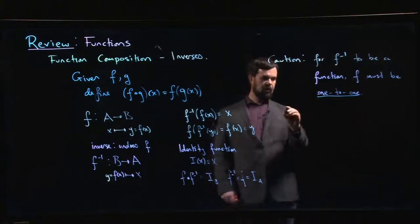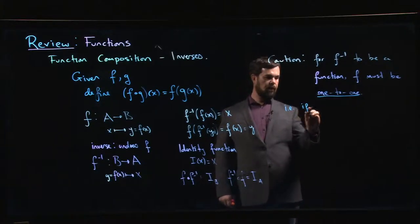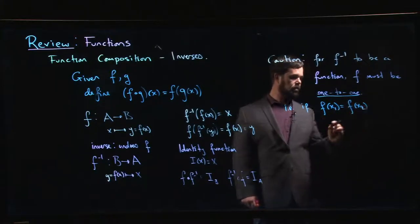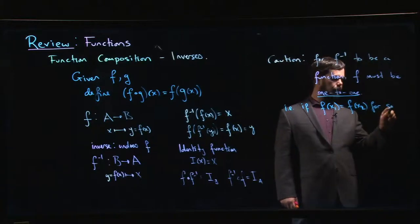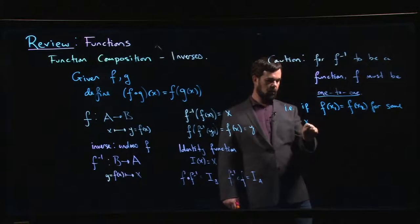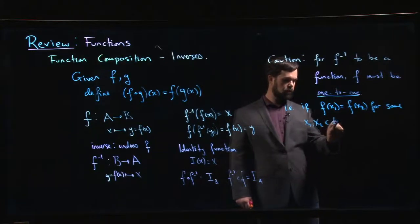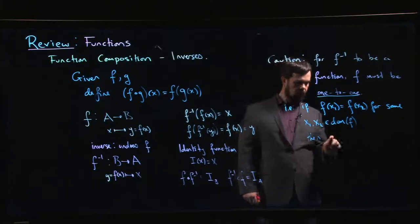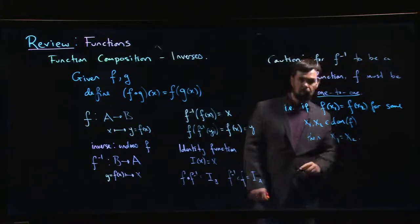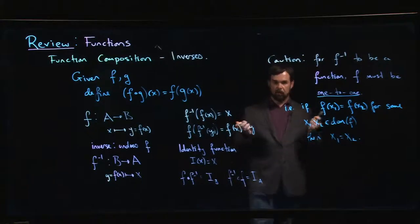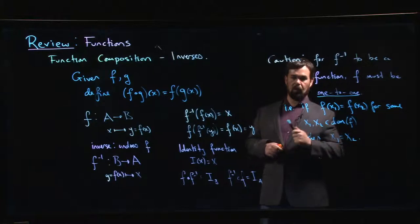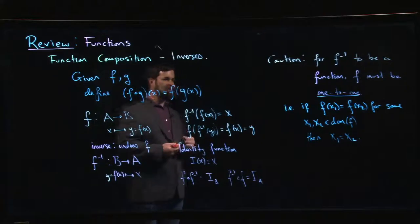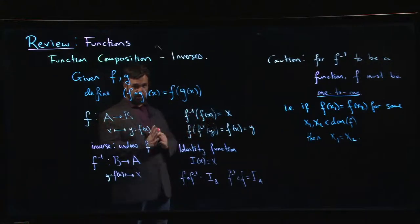And usually the way you characterize this is you say, well, if f of x1 equals f of x2 for some numbers x1 and x2 in the domain. Well, the only way that can happen is if x1 and x2 are really the same thing. Another way of putting this is that if x1 isn't equal to x2, then f of x1 can't equal f of x2. So this is saying that you can't get the same output for two different inputs.